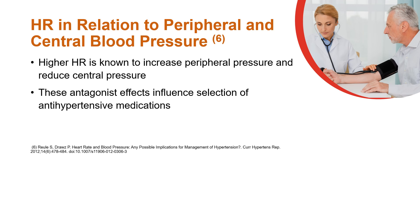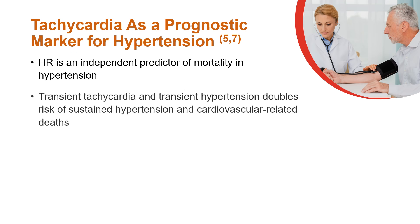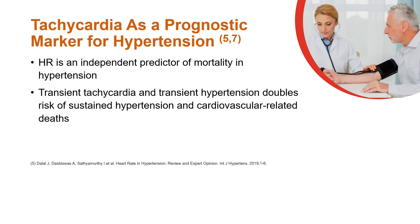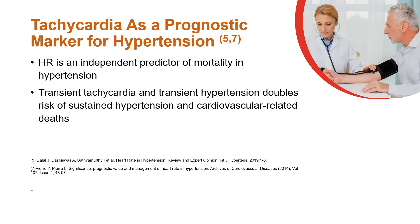These antagonistic effects of heart rate on the two pressures influence the selection of antihypertensive medications. Heart rate is an independent predictor of mortality in hypertension. The presence of transient tachycardia along with transient hypertension doubles the risk of sustained hypertension and cardiovascular-related deaths.